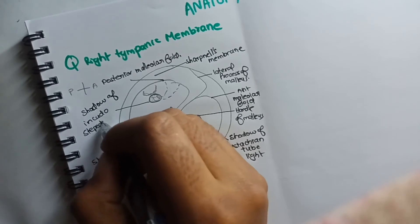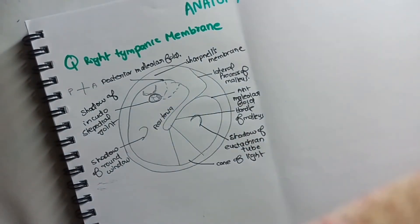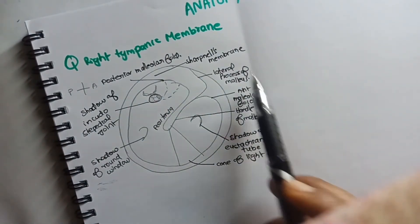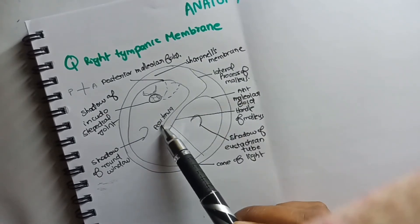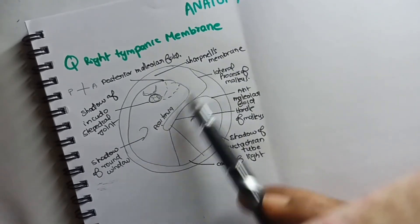So once again, peripherally Shrapnell's membrane, and to the center the pars tensa, the handle of malleus, the lateral process of malleus.